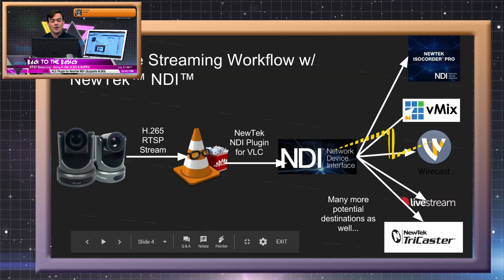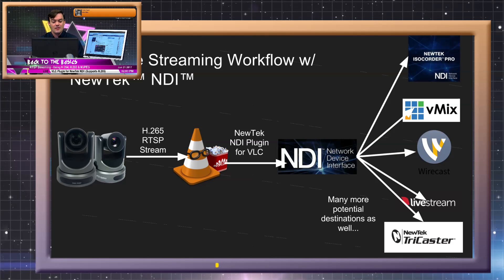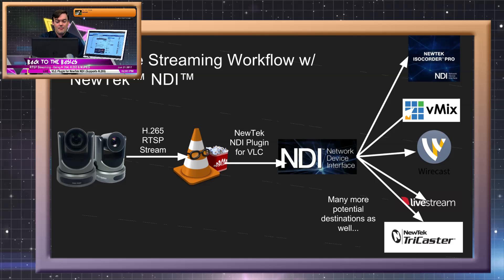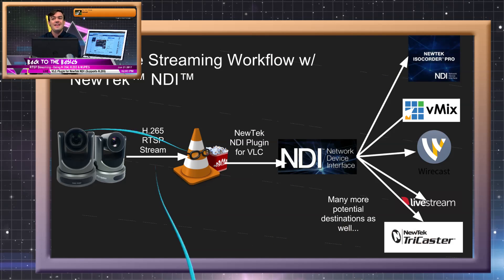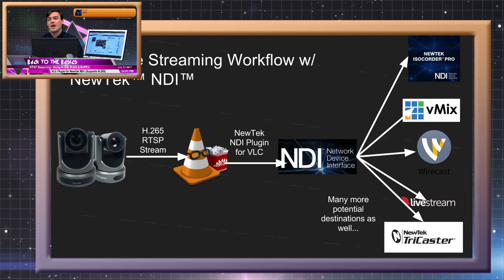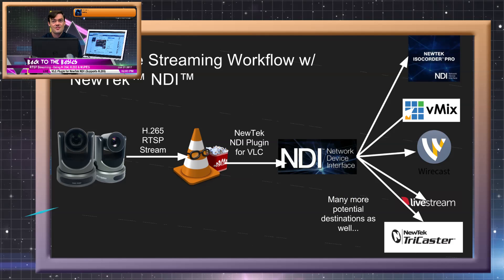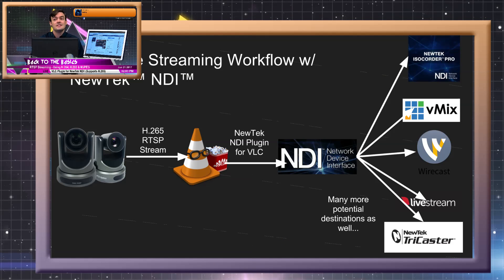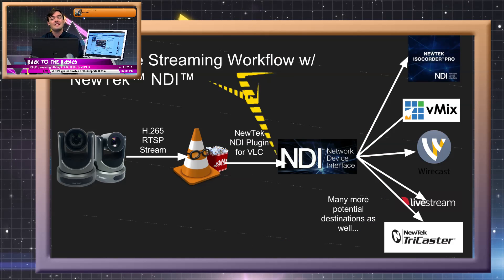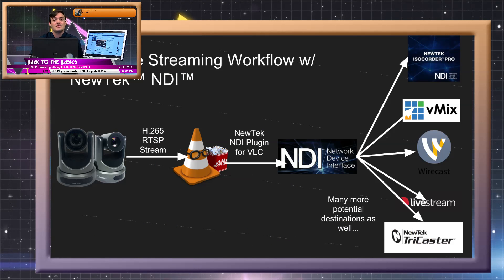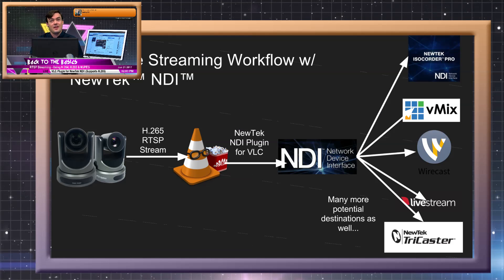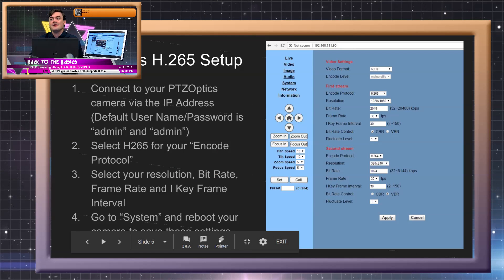In this tutorial, I'm taking your questions — I'm looking in the chat right in front of me. We're going to look at streaming to the NDI plugin and then using NDI to connect to vMix, Wirecast, Livestream, NewTek TriCasters, and some of the really great NewTek NDI tools, such as the ISO recorder, which effectively allows us to do isolated recordings of multiple NDI sources — potentially our RTSP streams.